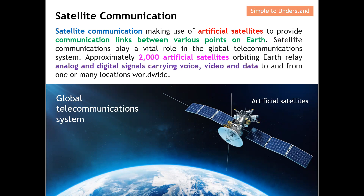Satellite communication means the use of artificial satellites to provide communication links between various points on earth. From this diagram you can see one of the artificial satellites up in the atmosphere. Someone on the earth transmits a signal all the way to the artificial satellite, the satellite receives the signal and can relay the message to another part of the world.